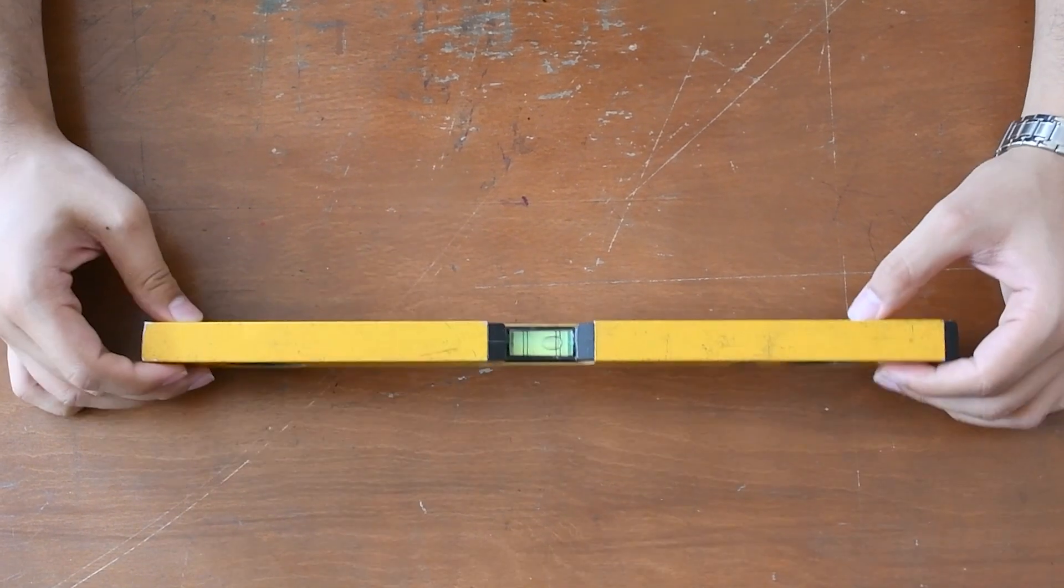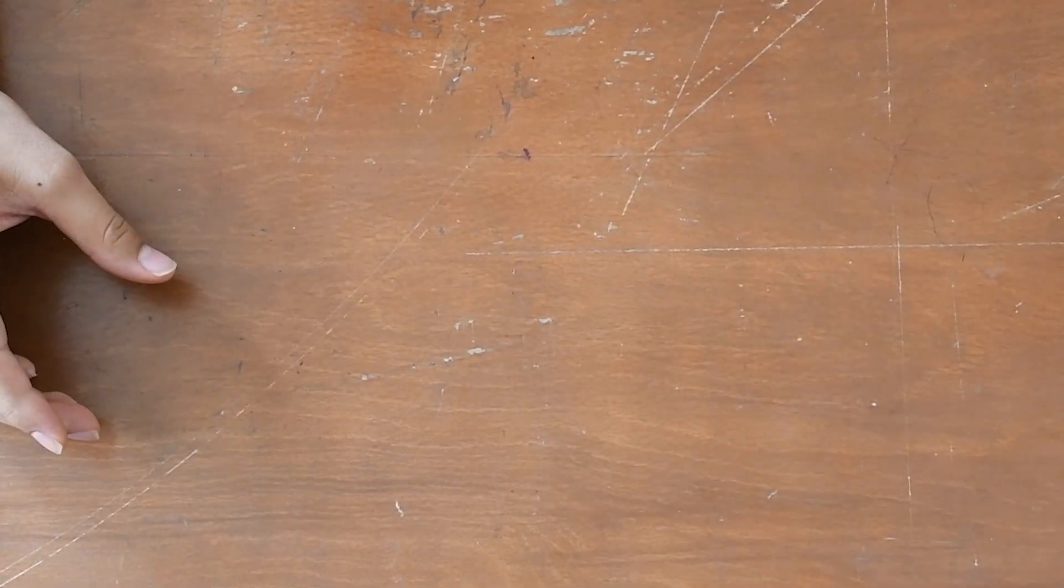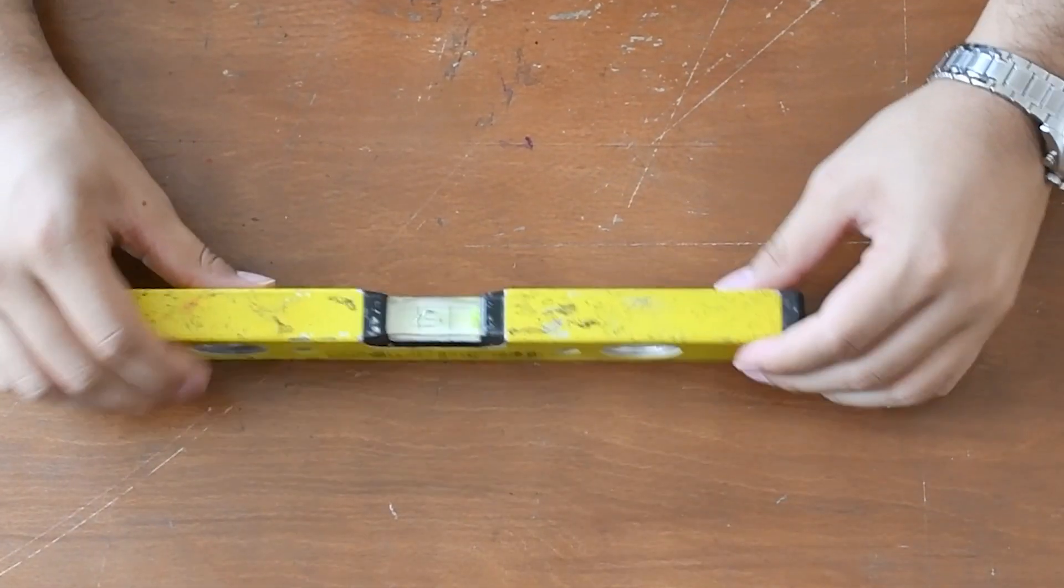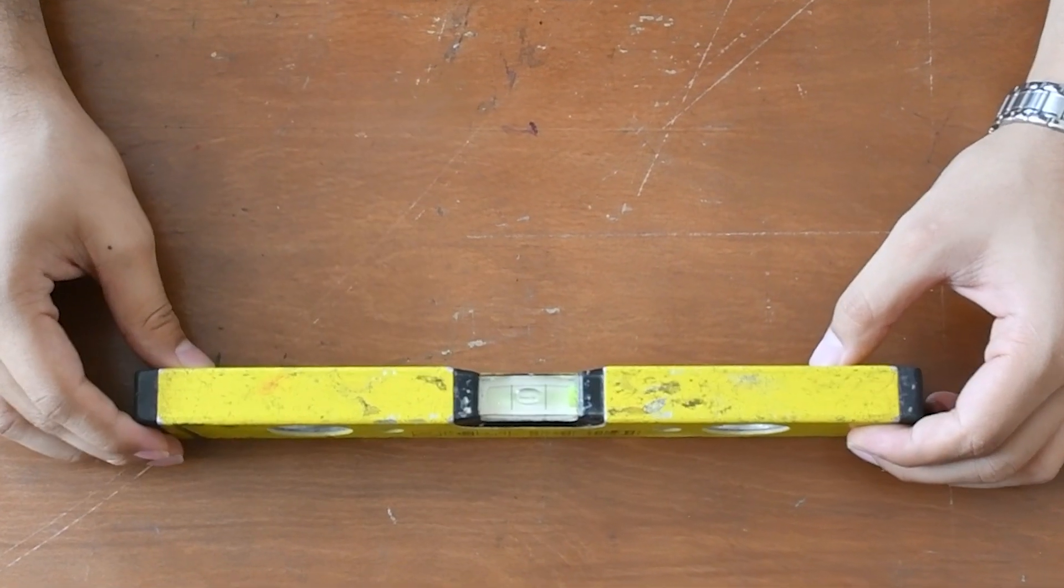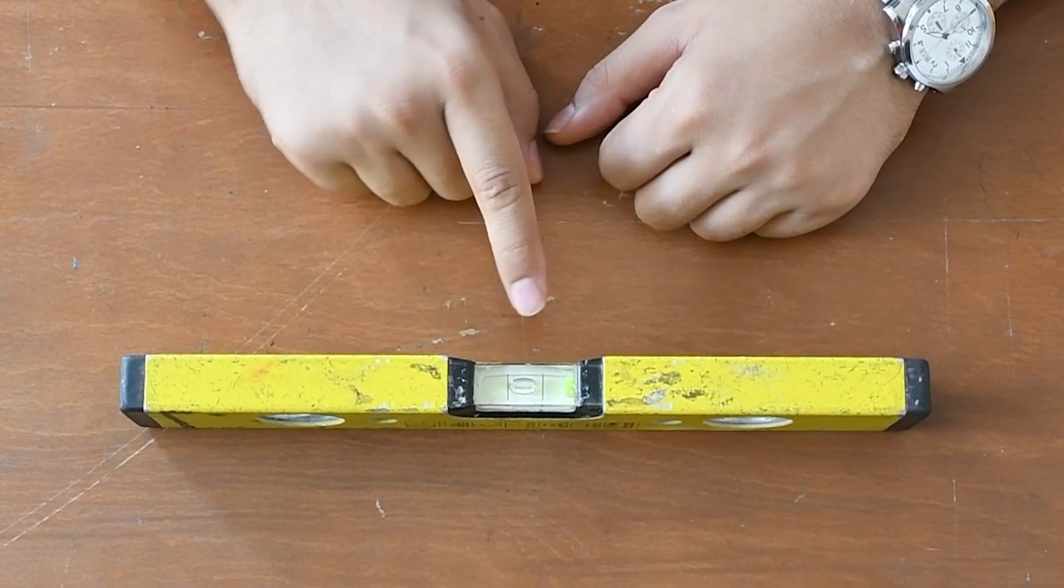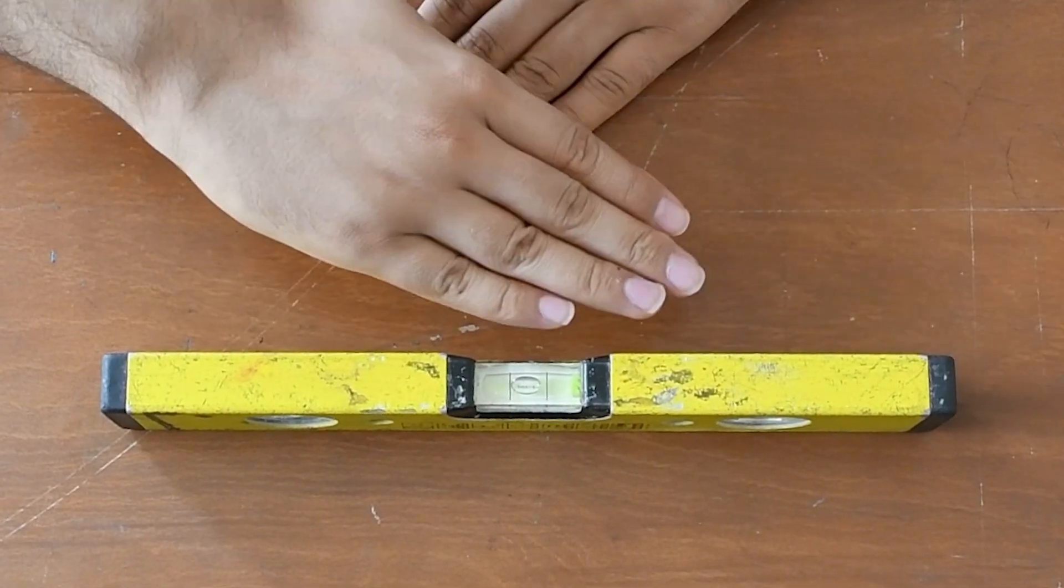I put this one aside and bring that one to check. According to the location of the bubble, the table has sloped to the left side.